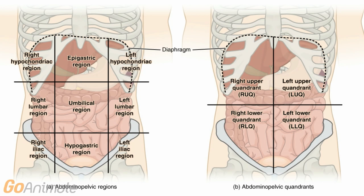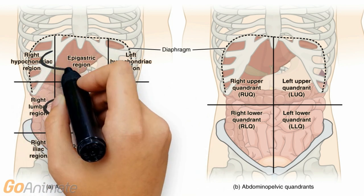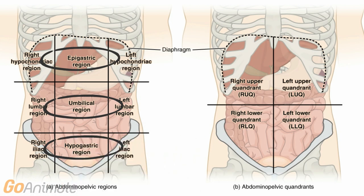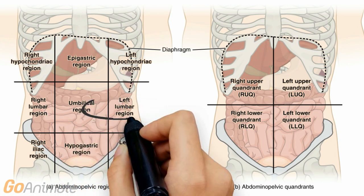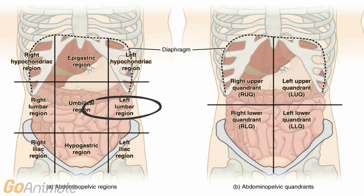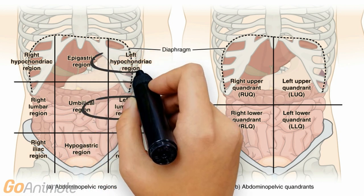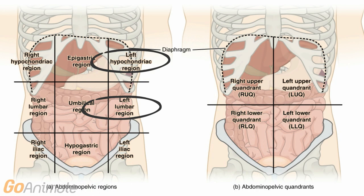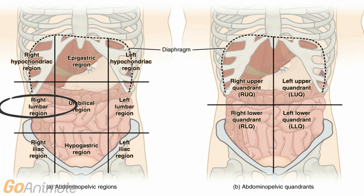Let's look at abdominal divisions next. There are two ways we can divide the abdomen. One way uses four planes to produce nine equal areas around the umbilicus, which is in the middle. The epigastric region is above the umbilical region and the hypogastric region is below. The left lumbar region is left of the umbilical region. Above the left lumbar is the left hypochondriac and below is the left inguinal or iliac region. On the right, there are the right lumbar, right hypochondriac and right inguinal or iliac regions. It is good to know which organs are located in each region.